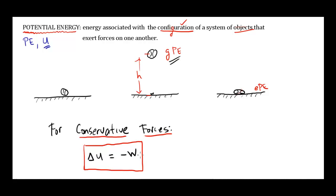When friction does work, that work is not being stored up in any meaningful way. If I slide a book across the floor, friction is doing work on that book, but that work is not being stored up — there's no potential energy as a result of the frictional force. But if I lift the object, gravity is doing negative work as the ball goes up. So gravity is doing negative work, and the ball is gaining positive potential energy.